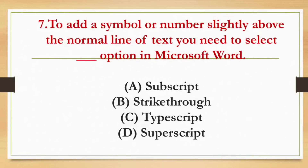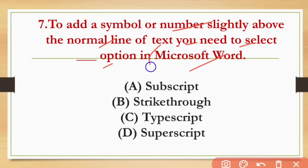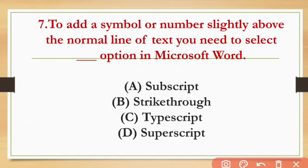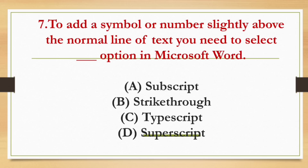To add a symbol or number slightly above the normal line of text, you need to select which option in Microsoft Word? The options are Subscribe, Subscript, and Superscript. The answer is Superscript.